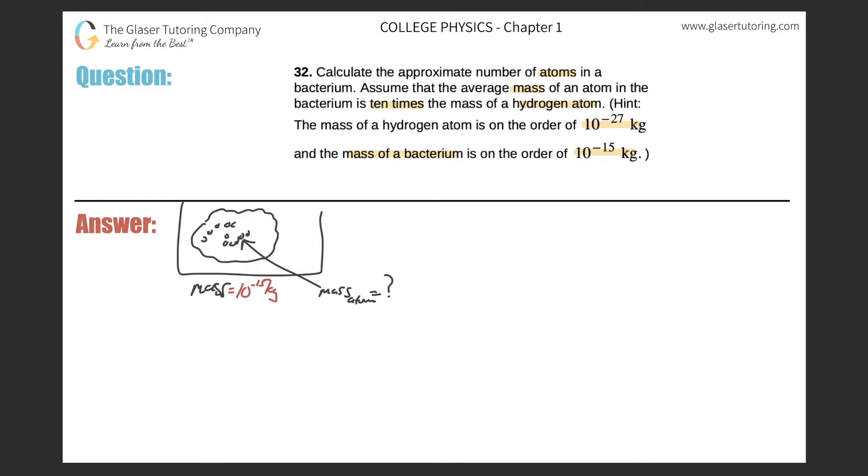So they also tell us that the mass, they also give us the mass of this hydrogen atom. And they say that the average mass of a single atom in the bacterium is 10 times the mass of the hydrogen atom. So the mass of the hydrogen atom, as they had given to us here, is 10 raised to the negative 27 kilograms.